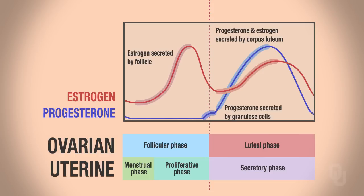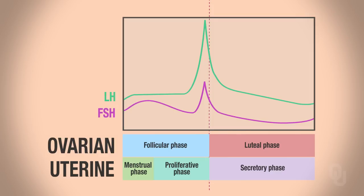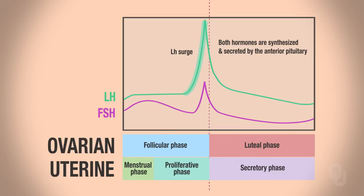Now let's look at LH and FSH. This is the LH surge that they talk about. We know that both of these hormones are synthesized and secreted by the anterior pituitary.